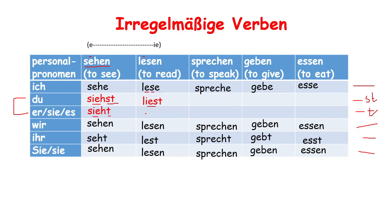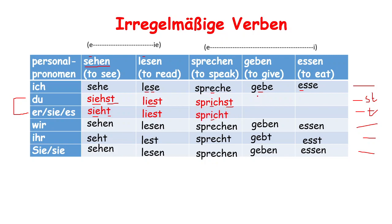For geben and nehmen, we have only an 'i' change — not 'ie'. So gibst (G-I-B-S-T) for du, and gibt for er/sie/es. And for essen, we already have a double 's', so we are not going to add another 's'.